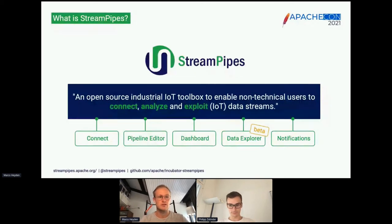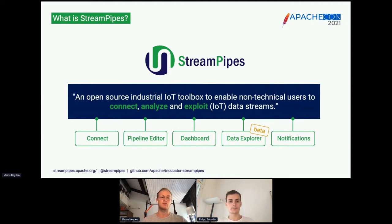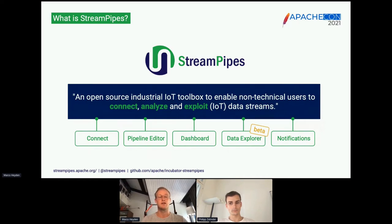What is StreamPipes? StreamPipes is an open source industrial IoT toolbox which enables non-technical users to analyze data streams. We focus on non-technical users such as engineers or computer science people who are not necessarily data scientists. StreamPipes enables them to connect to different data sources, analyze the data, create knowledge from the data, and exploit it.